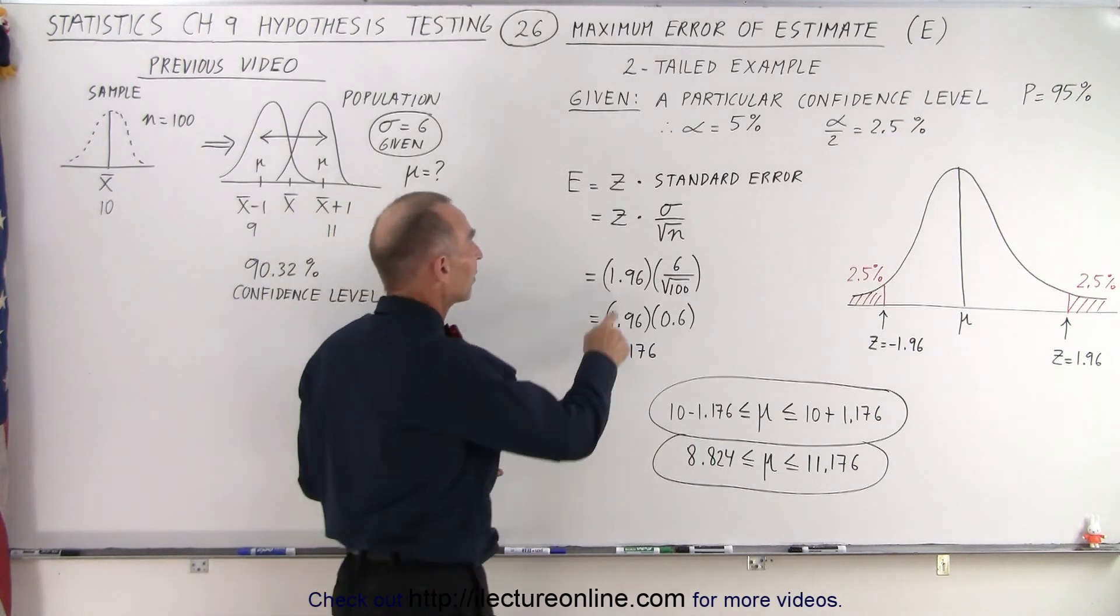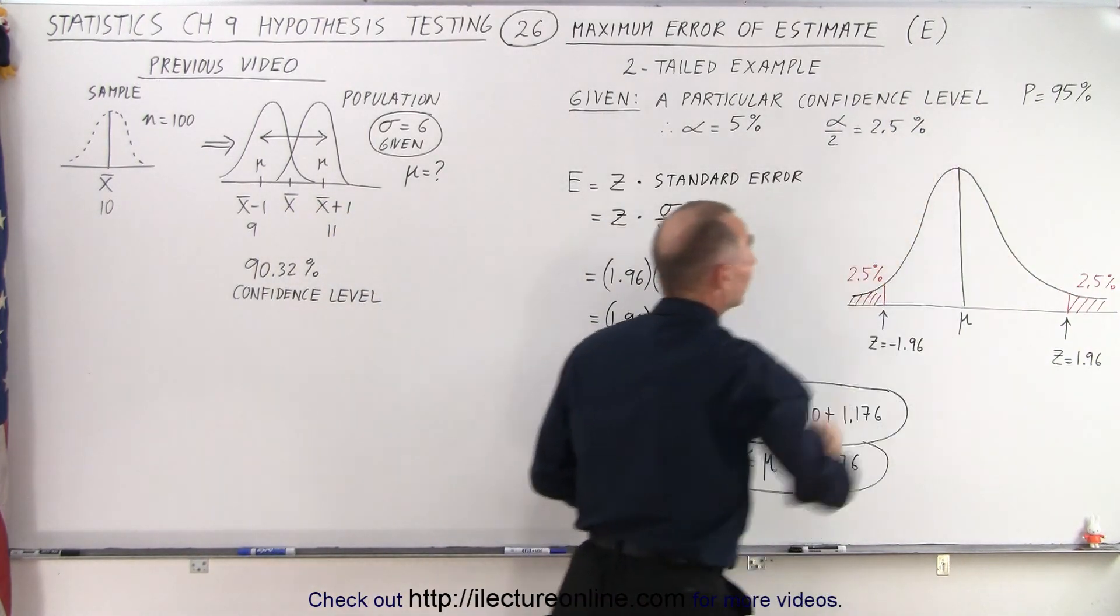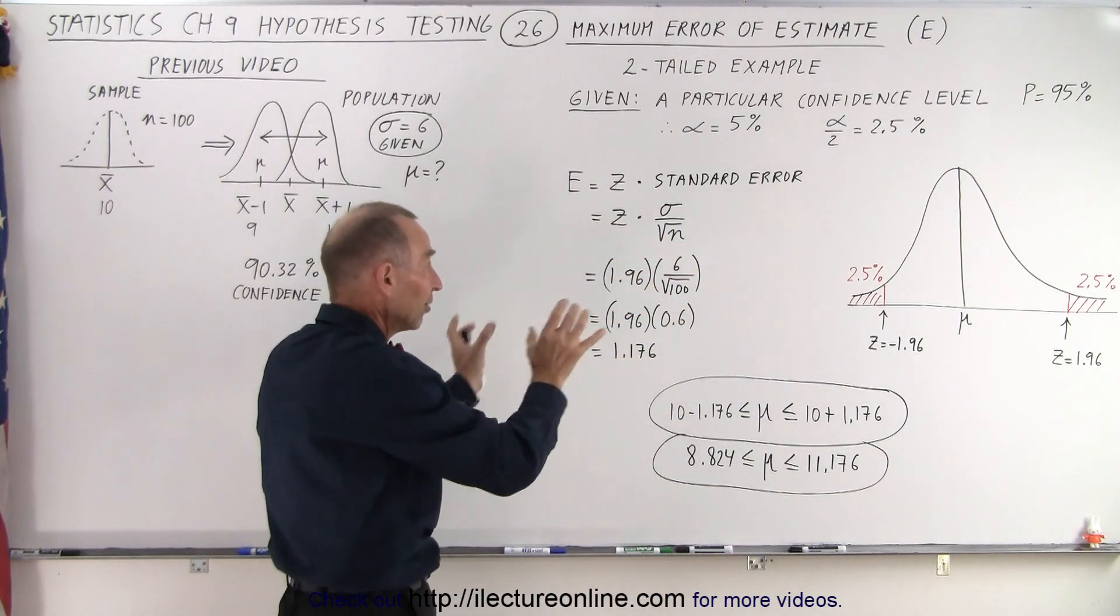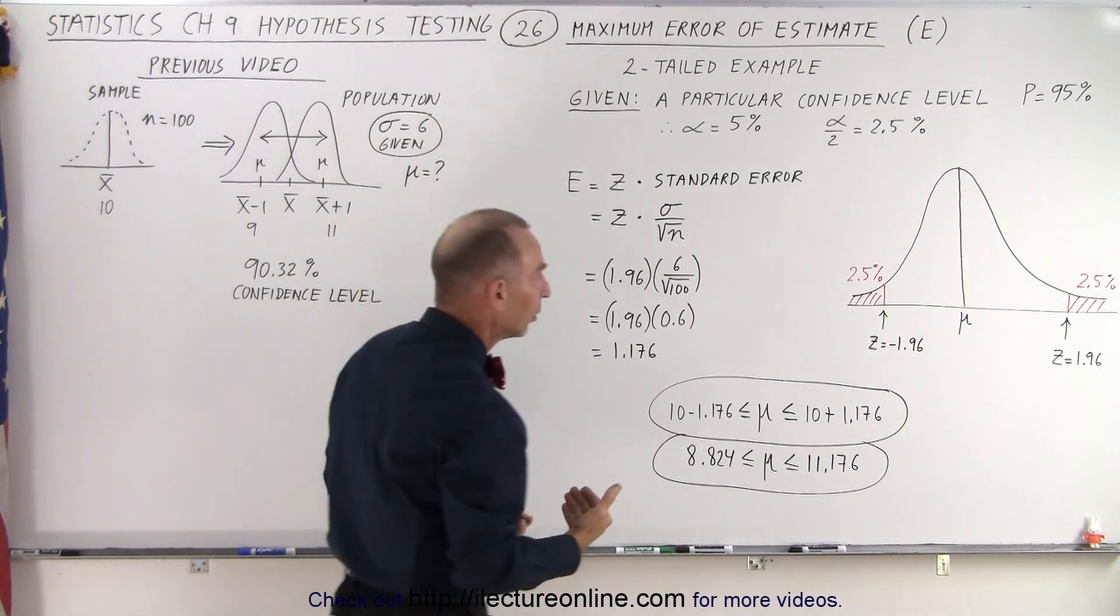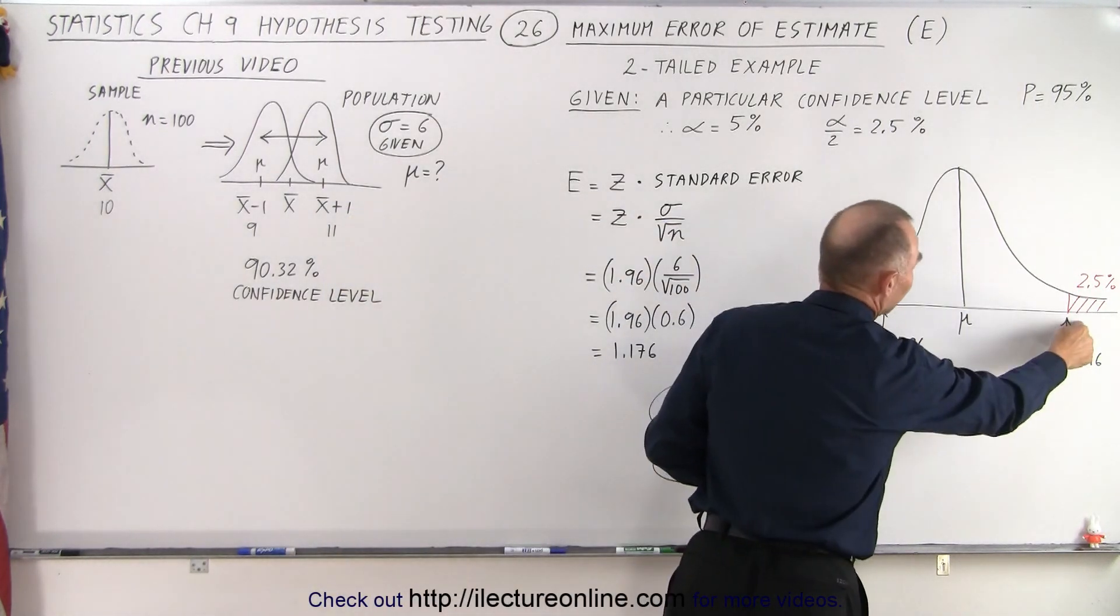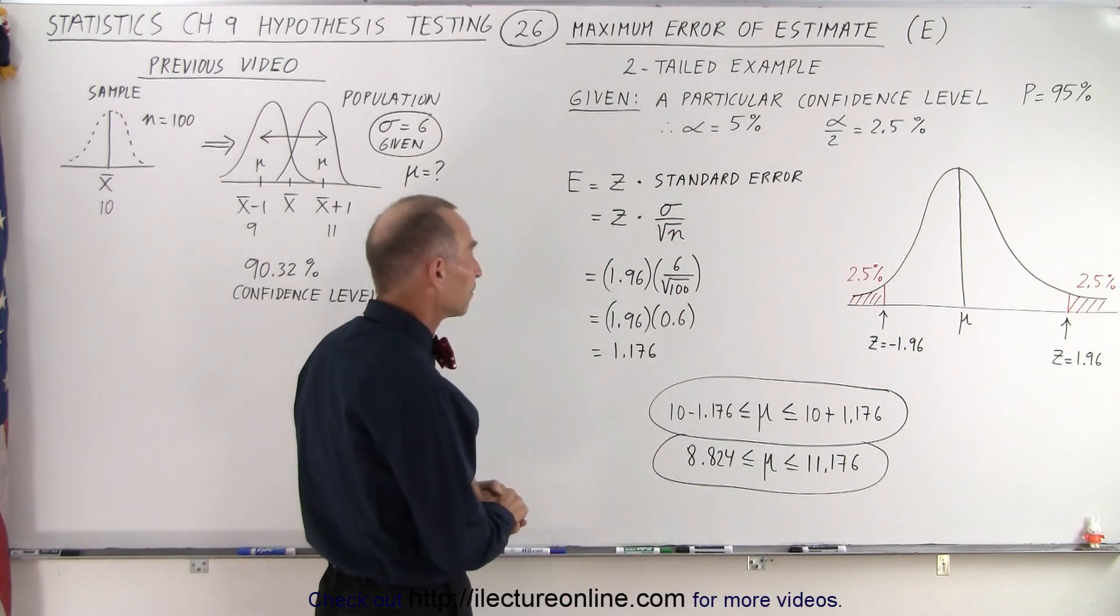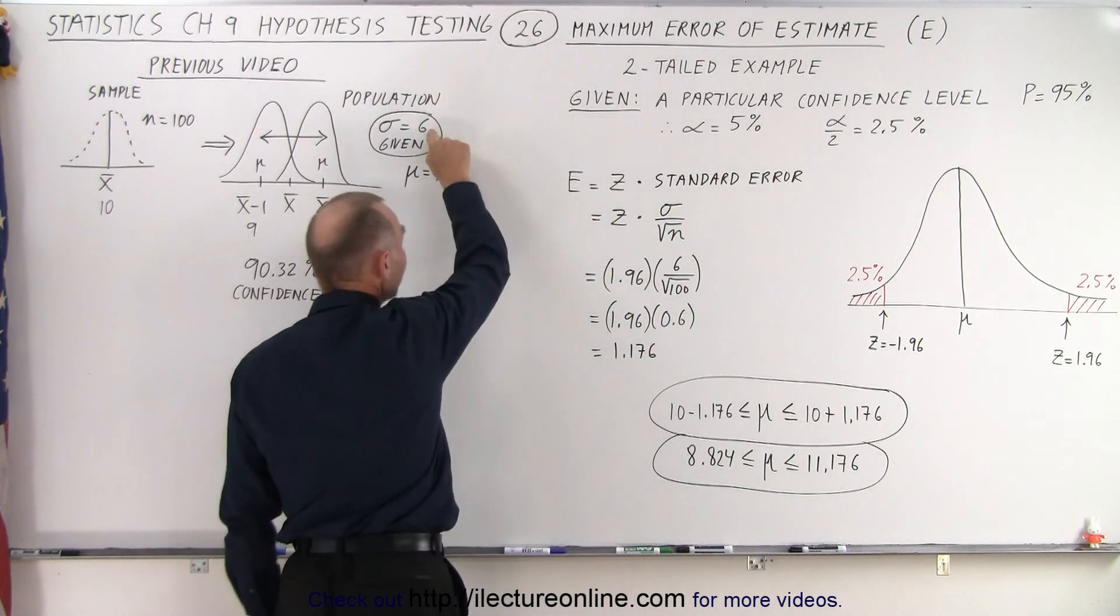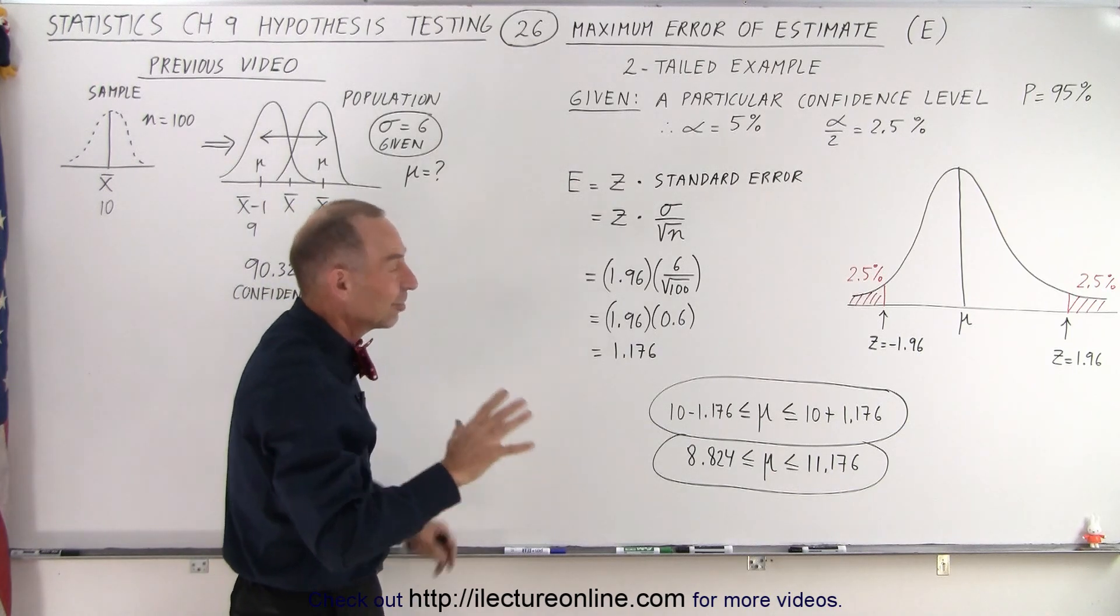So in this case, we found z to be 1.96, which is determined by setting the confidence level at 95% and dividing the remaining 5% in the upper and lower end. We use a table then to figure out 47.5% gives us the z-value of 1.96. Then we take the z-value and multiply it times the standard deviation, which was given. In this case, we're still going to give you the standard deviation of the population.